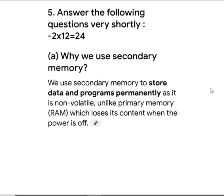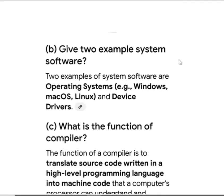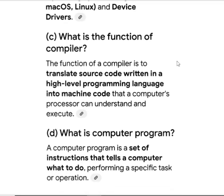Why do we use secondary memory? To store data and programs permanently. Give two examples of software: Operating System — Windows, Linux.